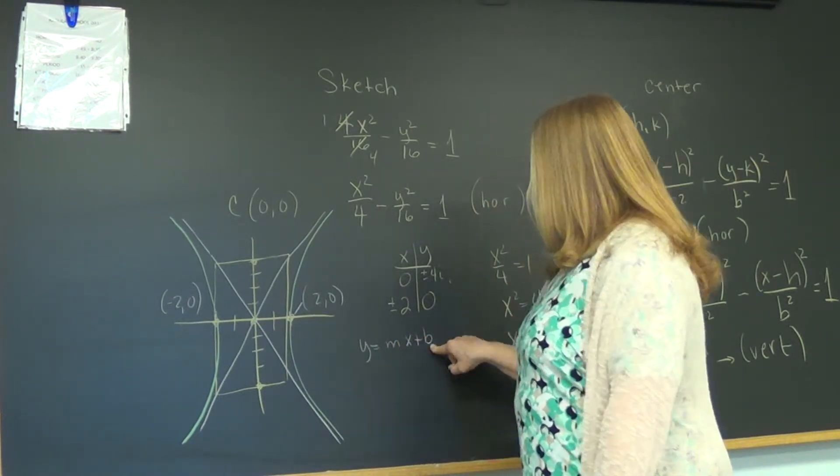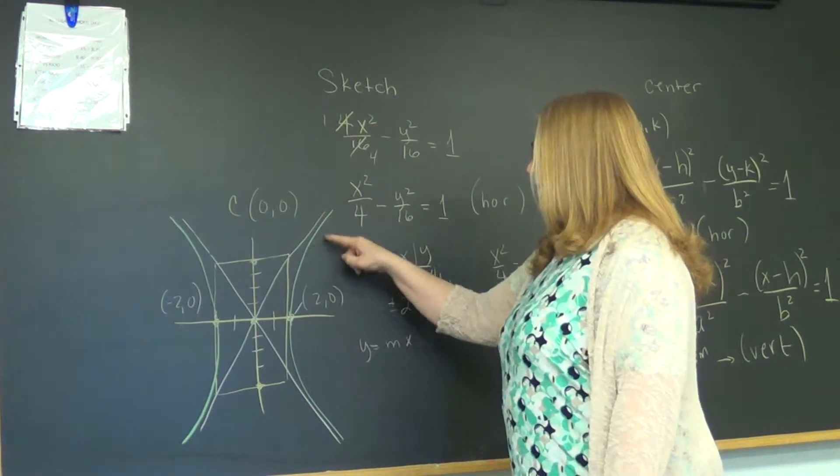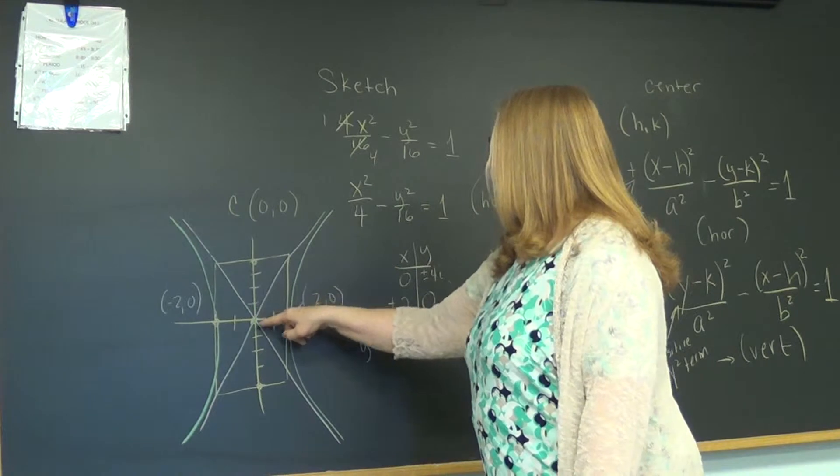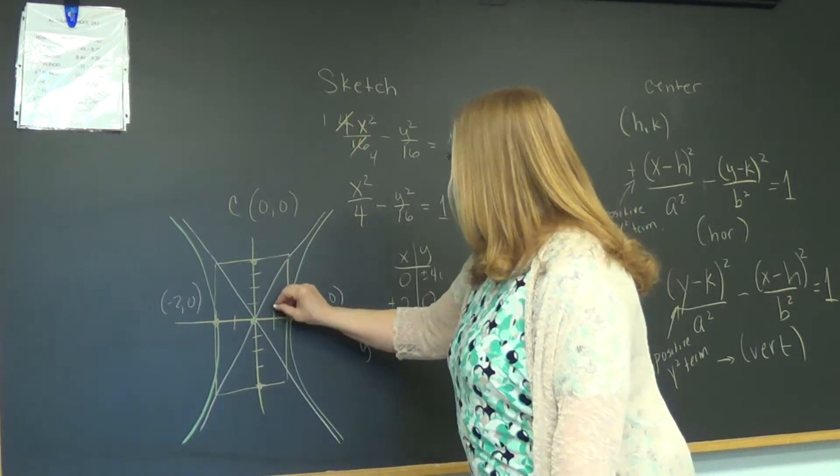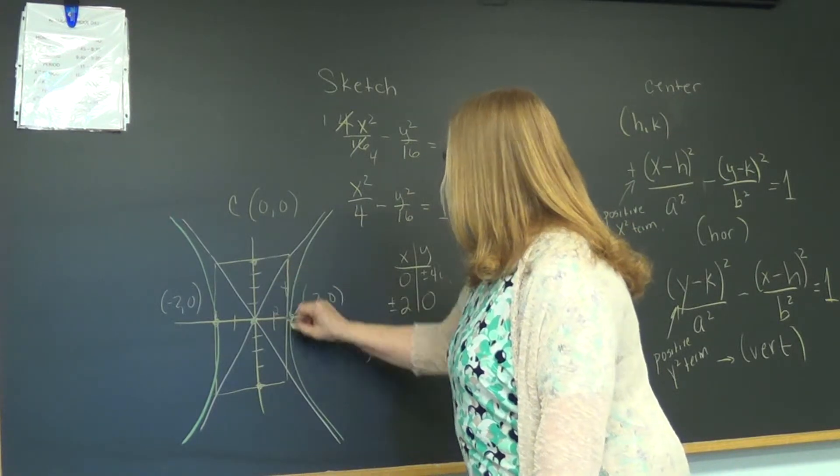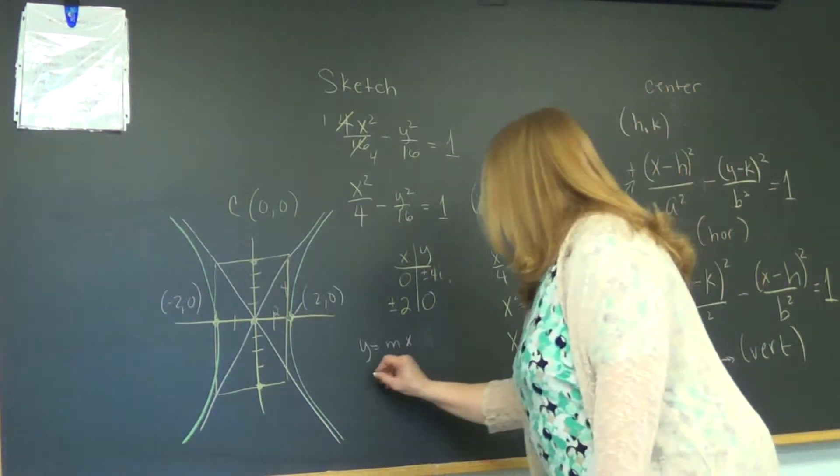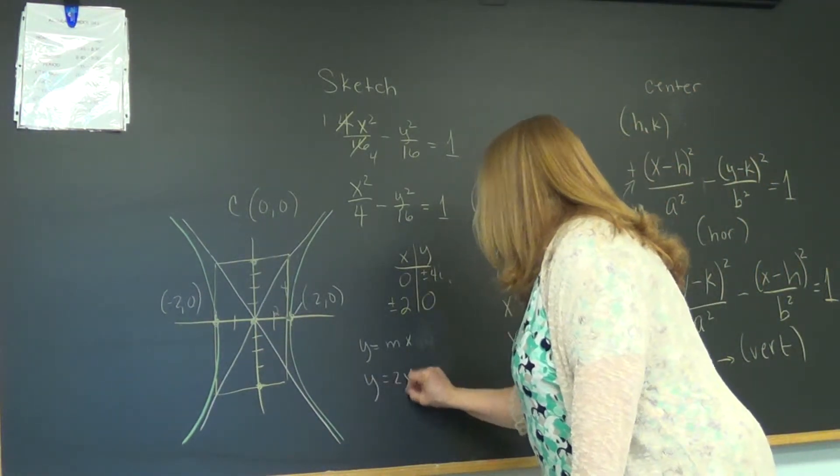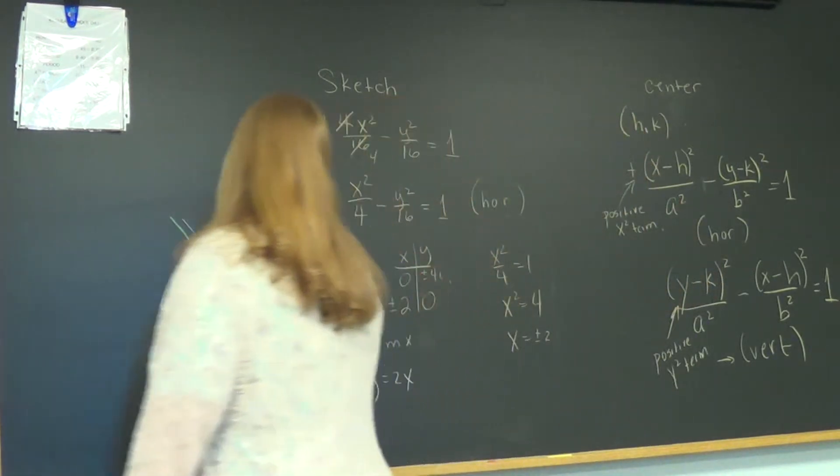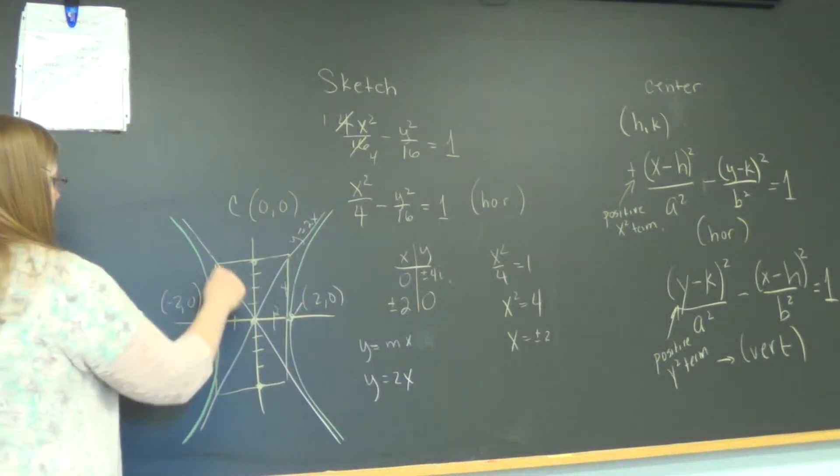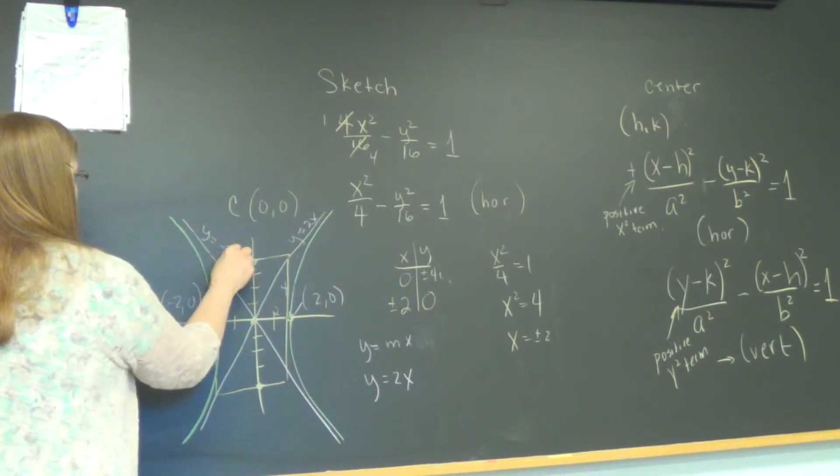b is where it crosses the y-axis, which is zero, so we don't have a b to worry about. The slope of this line is rise over run. Notice we went over two and up four, two and four. So rise over run gives me a slope of two. So y equals 2x is the name of this asymptote, and this one will work similarly except the slope will be in the negative direction, y equals negative 2x.